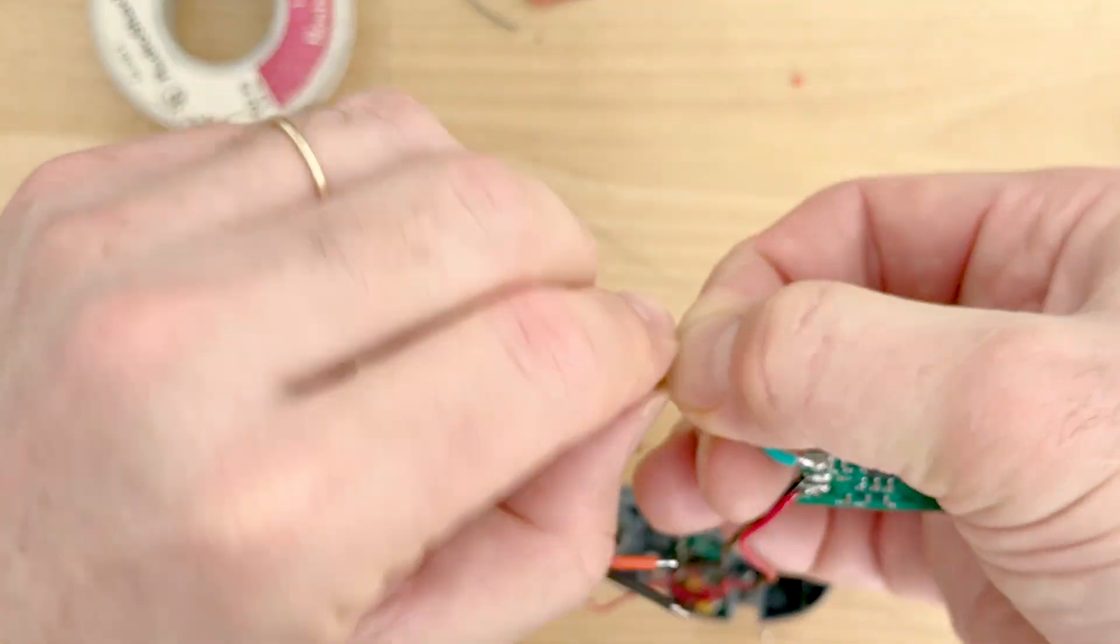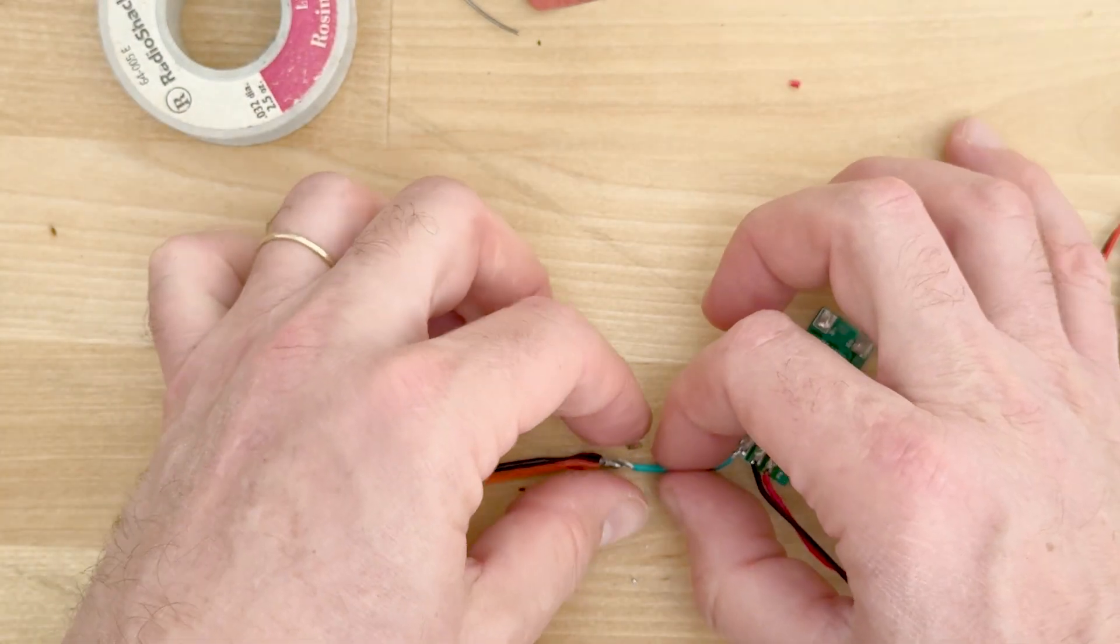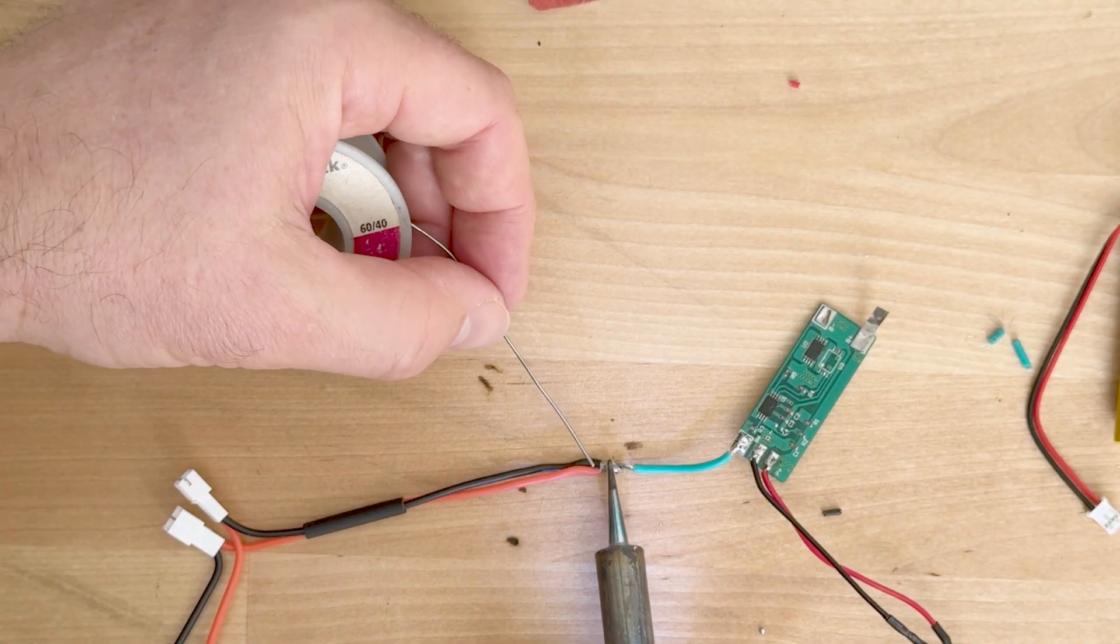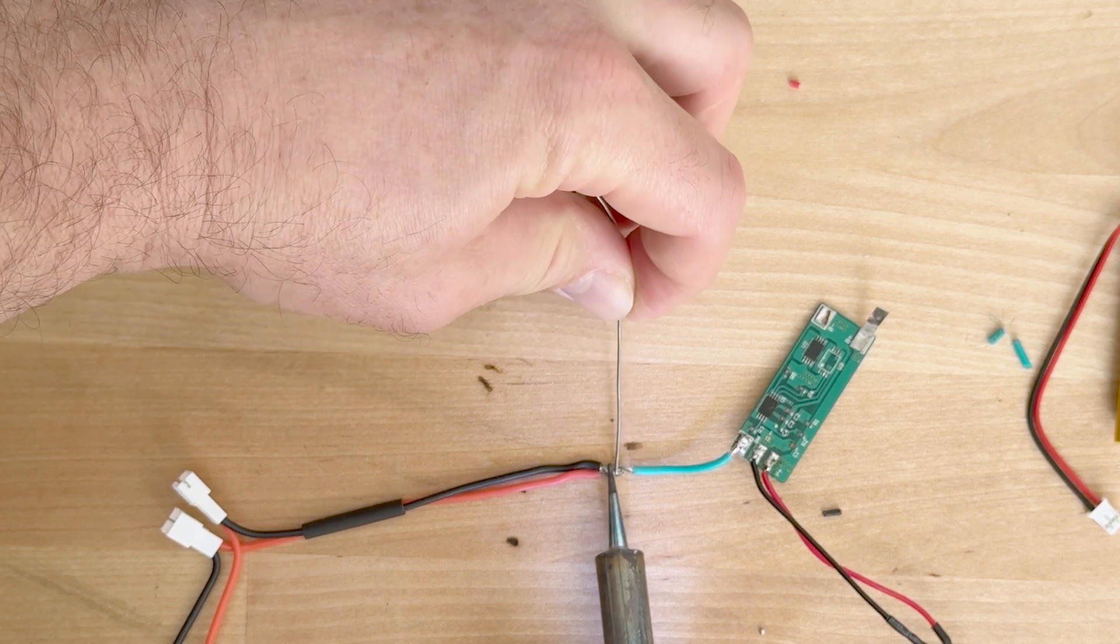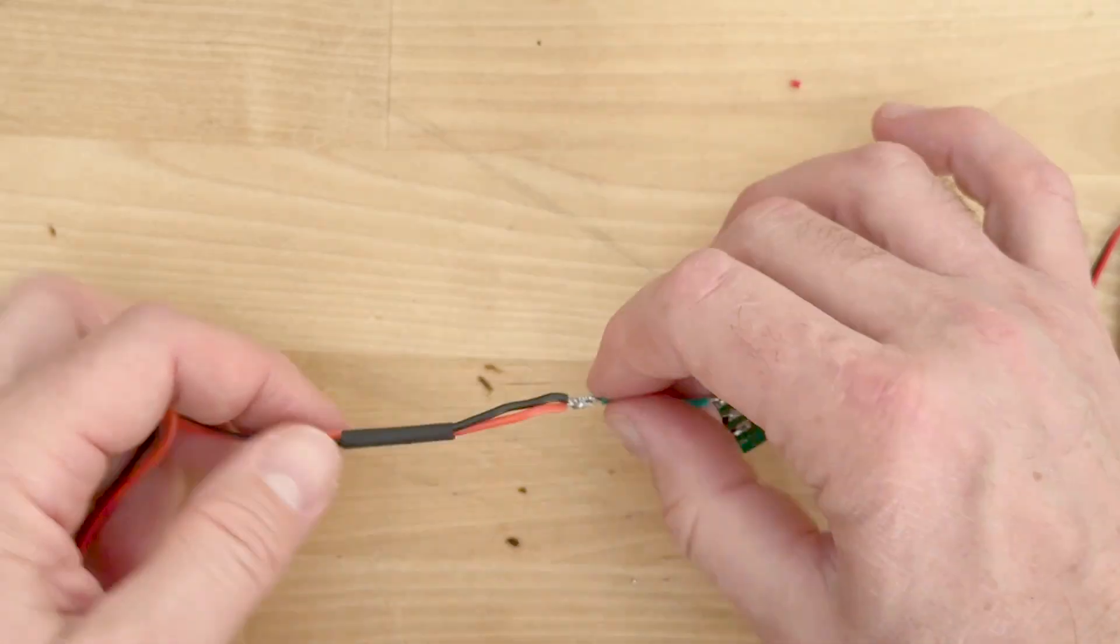So the green wire acts as our jumper to create the 7.4 volts needed. So you can see what I'm doing here, I'm soldering the green wire to the positive and negative leads that we twisted together.